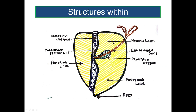So you find the median lobe present above the prostatic utricle, which is in the midline. On either side, the prostatic utricle is related to the ejaculatory ducts. The ejaculatory ducts enter the prostate from its posterior surface, passing obliquely to reach a position on either side of the prostatic utricle.